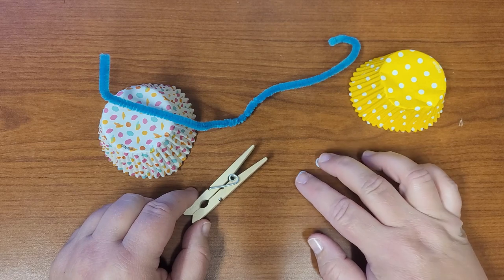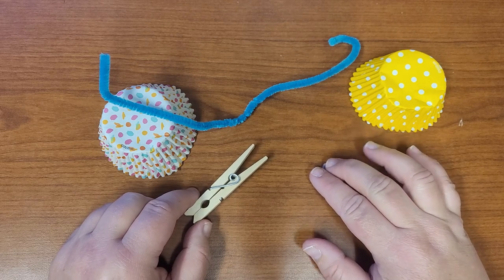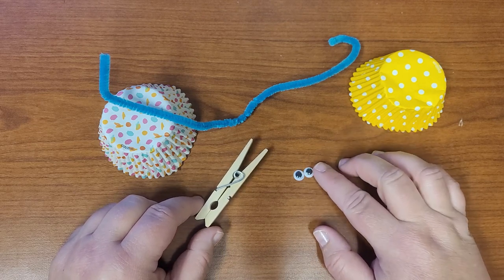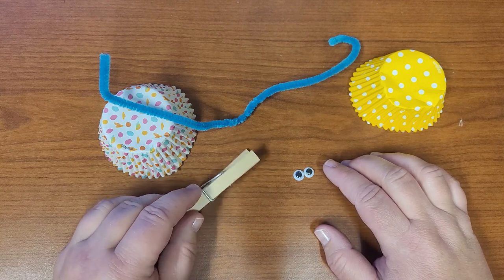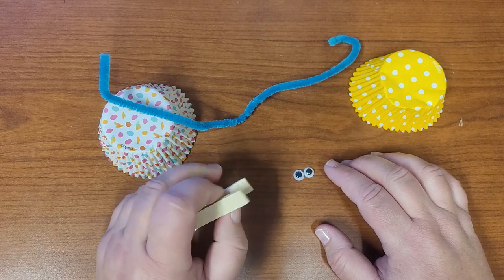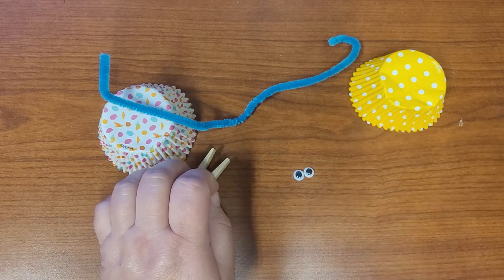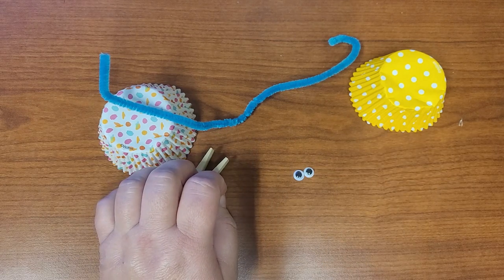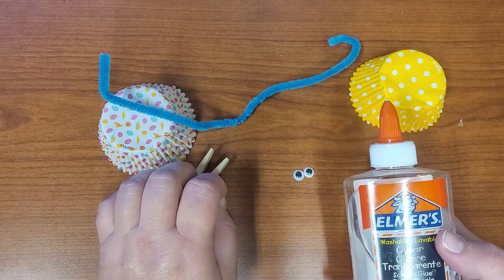Now we did discover that some of the bags have little holes in them, so if you don't have googly eyes in your bag you can either draw the butterfly eyes on with a marker or you can come ask us and we'll give you some more googly eyes. And then the one thing you don't have in your kit that you will need is some glue.